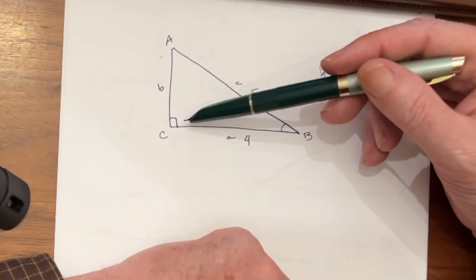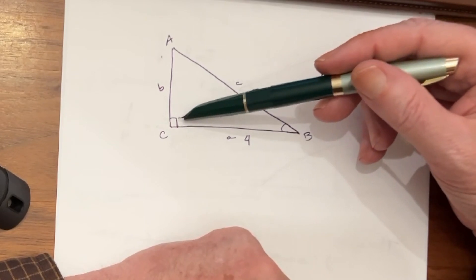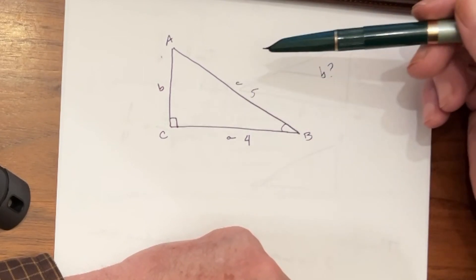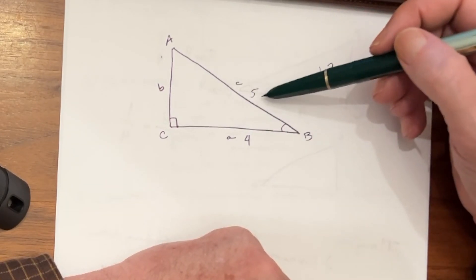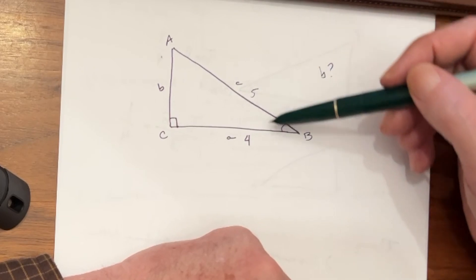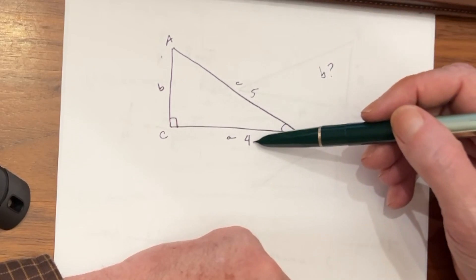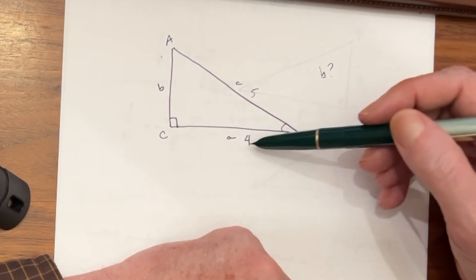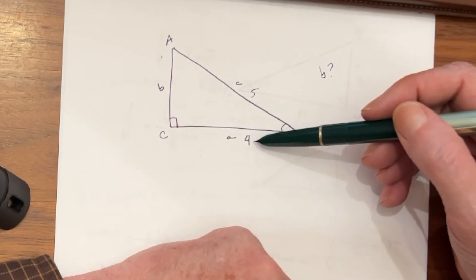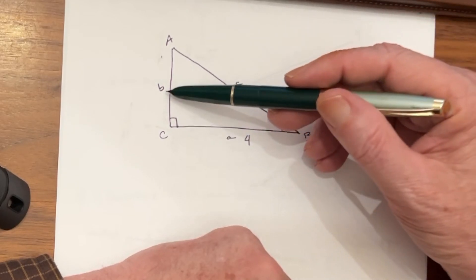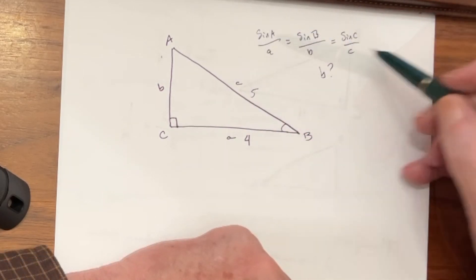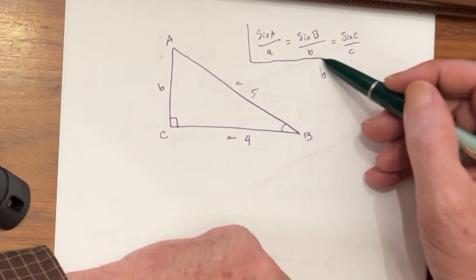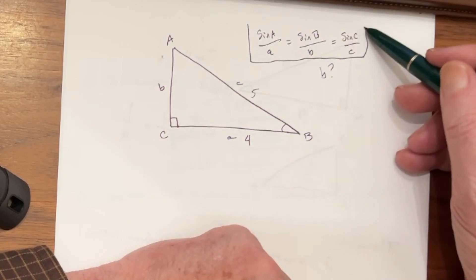We have a right triangle here, as denoted by this little square right triangle symbol, and we're given the length of the hypotenuse, side c, is 5, and the adjacent side to angle b is 4. What we want to do is find the length of side b, and we're going to use the rule of sines in this form right here.